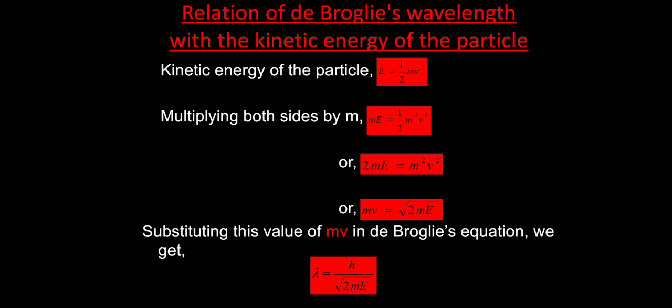Now let us look at the relationship of the De Broglie wavelength with kinetic energy. Kinetic energy E equals half mv squared. Multiplying both sides by m gives: mE equals half m squared v squared, or 2mE equals m squared v squared, therefore mv equals the square root of 2mE.